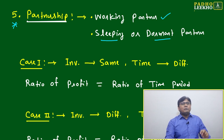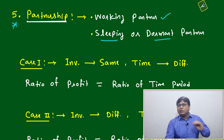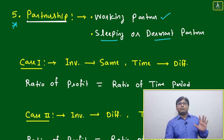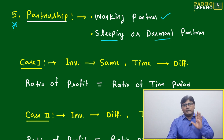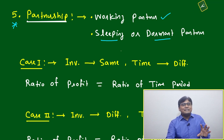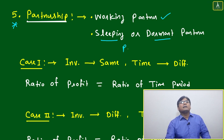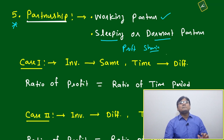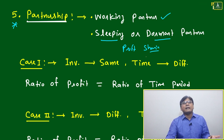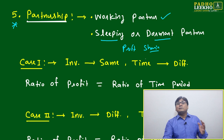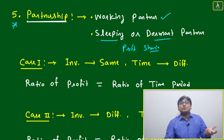Now, how to calculate the profit percentage — that is the only issue from a mathematical point of view for this chapter. We are only interested in how to calculate the profit percentage, or you can say profit sharing. Partnership means sharing — it is simply about sharing. So what will be the mathematical mechanism to share the profit?